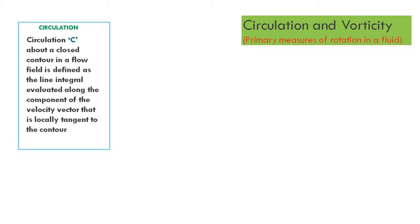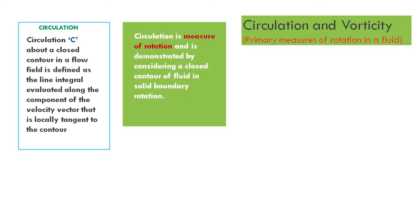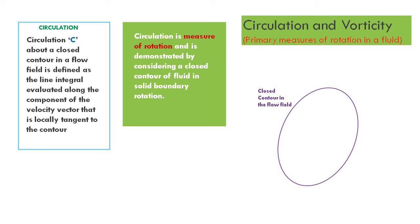This definition is a little difficult to understand initially, but it will become clearer. An important point is that circulation is always a measure of rotation. To better describe it, consider a closed contour in a flow field. We take a closed contour — of any shape — just for analysis purposes to describe what is meant by circulation and vorticity.